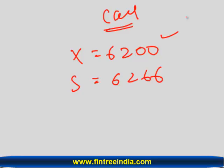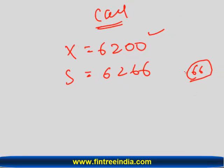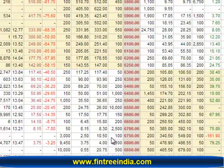Now this is a call option, which means I have a right to buy at 6200. If I buy today, how much profit am I earning? 66. But let's look at what price this option is trading. This option is trading at a price of 177.